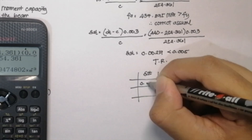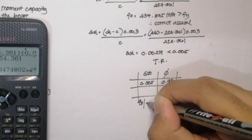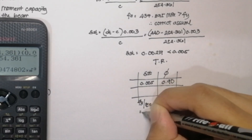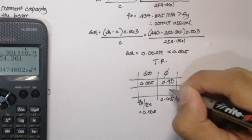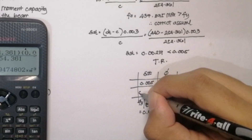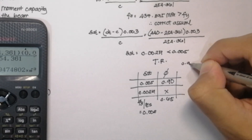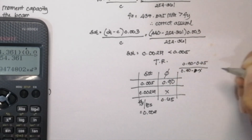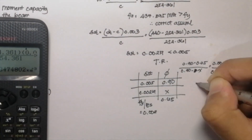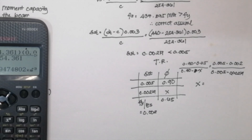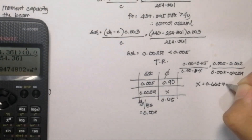For the transition region, we solve for the reduction factor φ by linear interpolation. Setting up a two-column table: strain 0.005 corresponds to φ = 0.90, and strain at Fy of 0.002 corresponds to φ = 0.65. Our strain of 0.00219 interpolates to give φ = 0.66575.